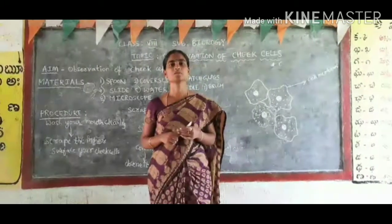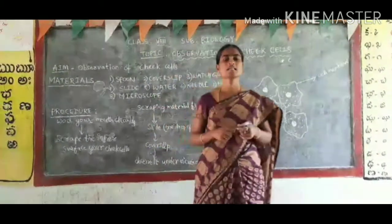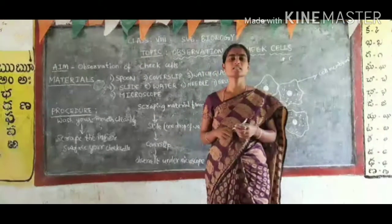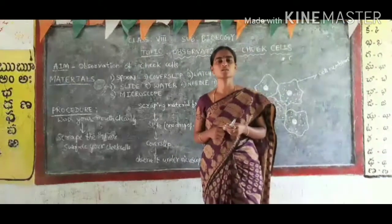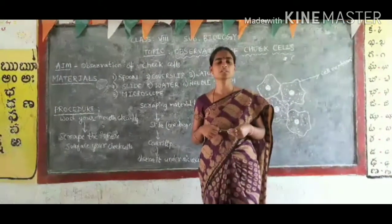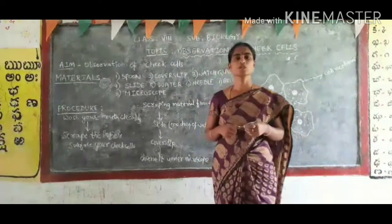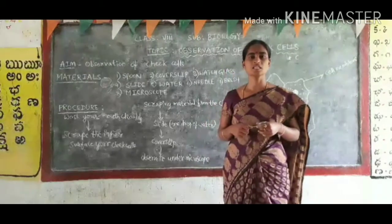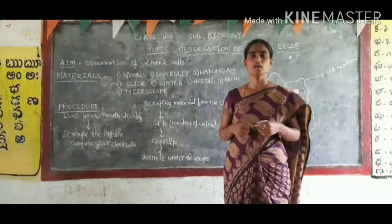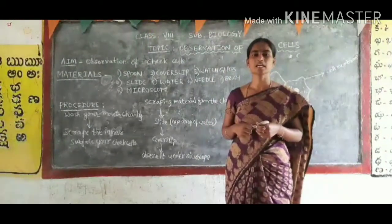Good afternoon, good afternoon to everyone. In the last class we discussed about the structure of an onion cell. Now we are going to discuss about the observation of cheek cells. What are the materials required to do this activity?